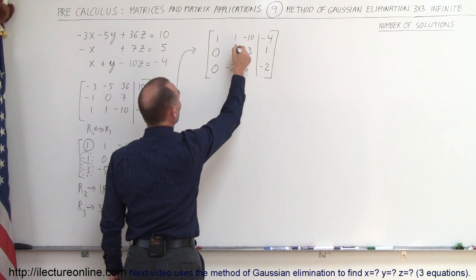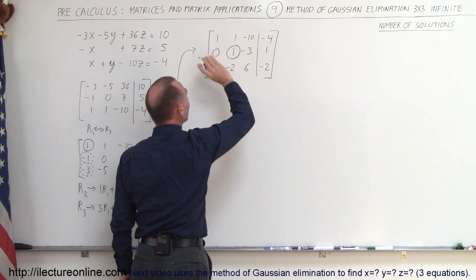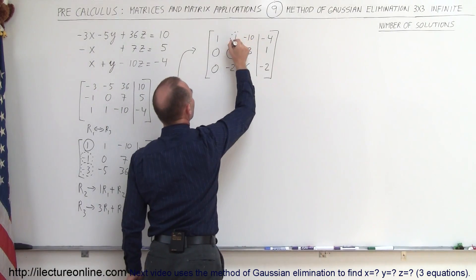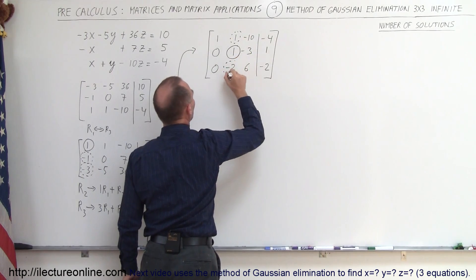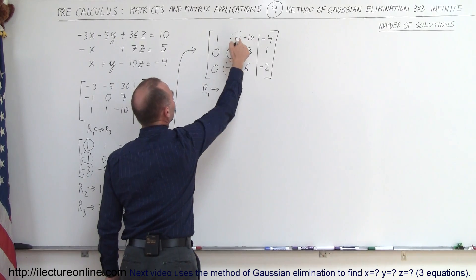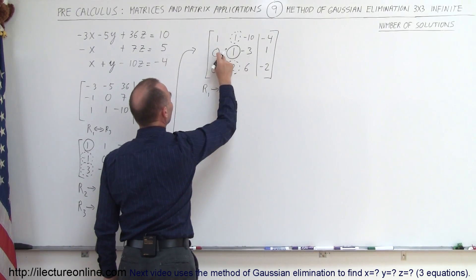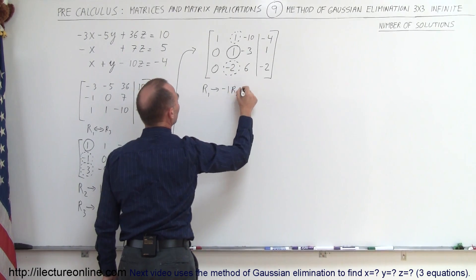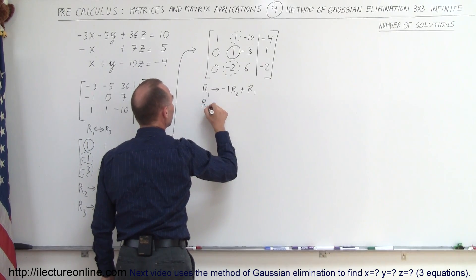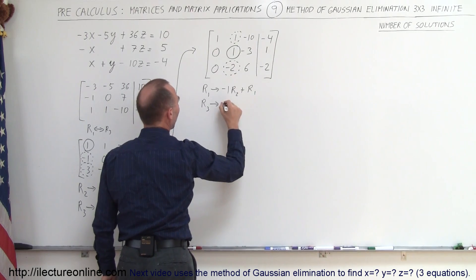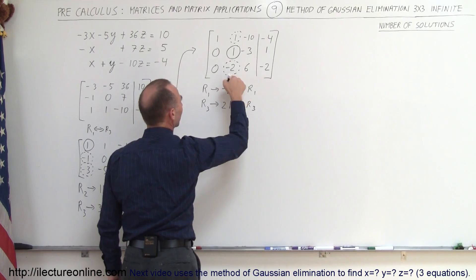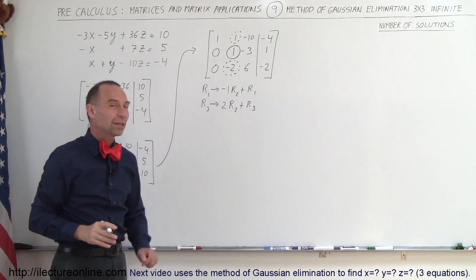Now we want to go to the second column. We want this to be 1, and since it's already a 1, we don't have to do anything. We now use that 1 to get rid of this 1 in the first row and the negative 2 in the third row. We do that by taking R1, replacing it by negative 1 times R2 added to R1. Then we take R3 and replace it by positive 2 times R2 added to R3 to eliminate that negative 2. Let's see what we end up with.